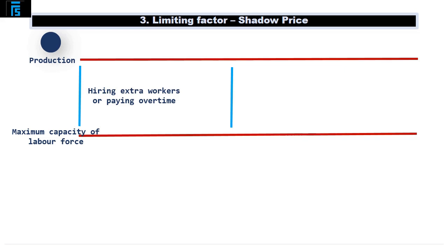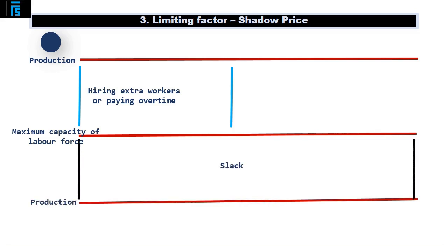Management will want to know the maximum amount they should be paying for temporary staff, or the amount of overtime they can actually afford to pay. If a company is not utilising the maximum availability of one of their resources, we call this slack. This may occur when we have a limited amount of material and an overcapacity of labour hours — the workers will run out of material to work with and sit idle until additional material is purchased, or material will be stockpiled as there is not enough labour to convert it into product.